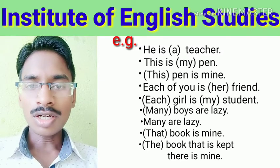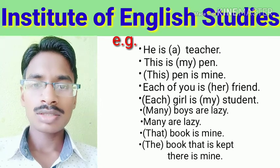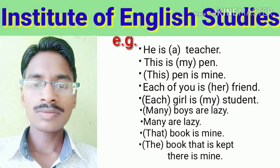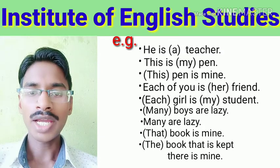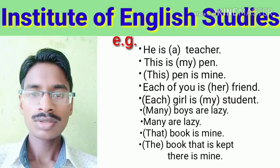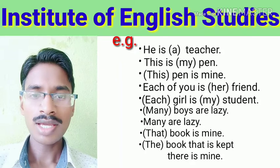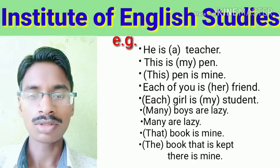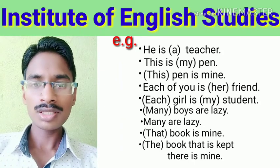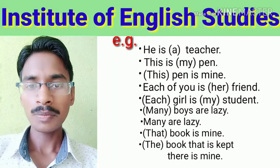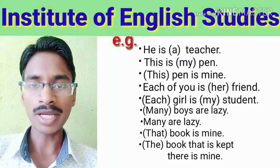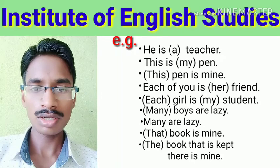In 'Each girl is my student', 'each' is the determiner and 'girl' is the noun. Also, 'my' is the determiner and 'student' is the noun. In 'Many boys are lazy', 'many' is the determiner and 'boys' is the noun.